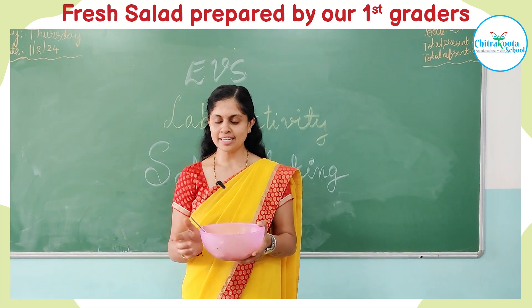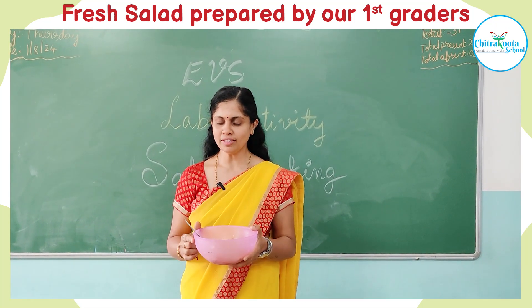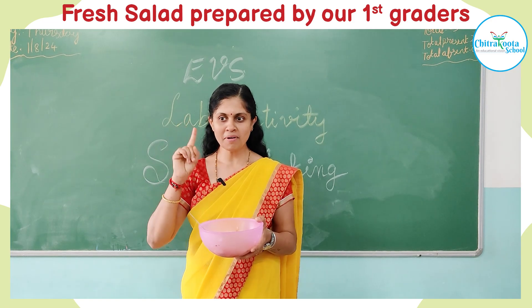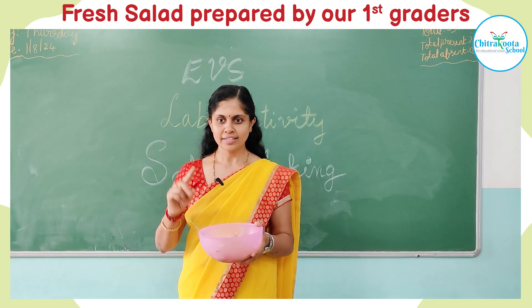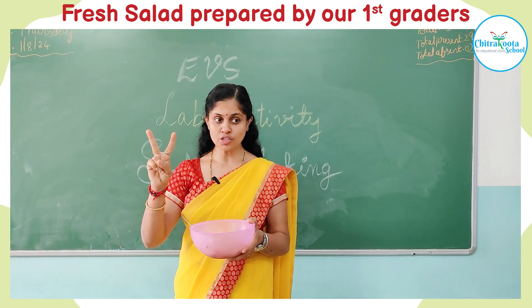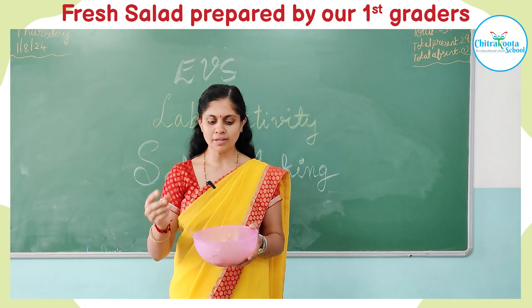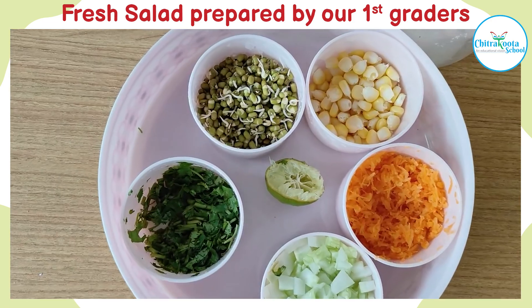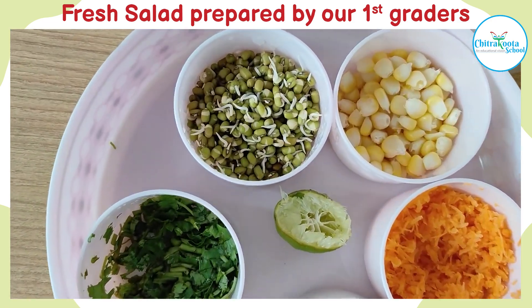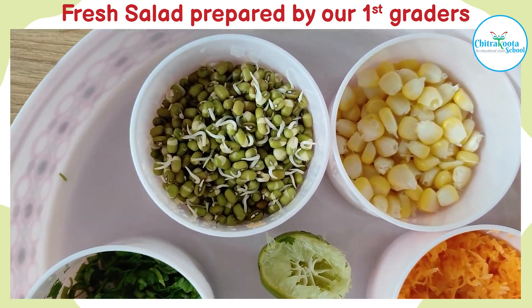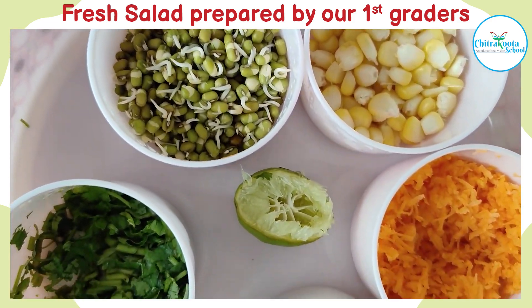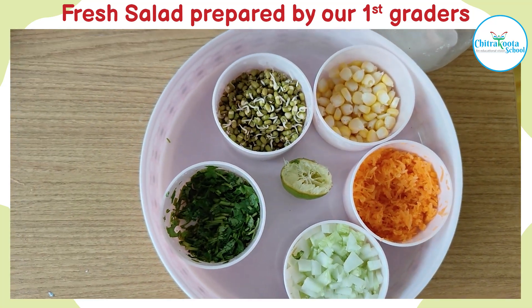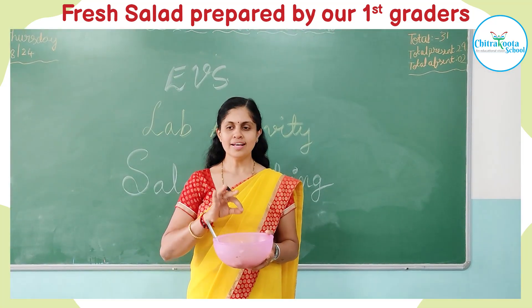Let's add the ingredients one by one. We should add cucumber first. Take two spoons of chopped cucumber and add to the bowl.